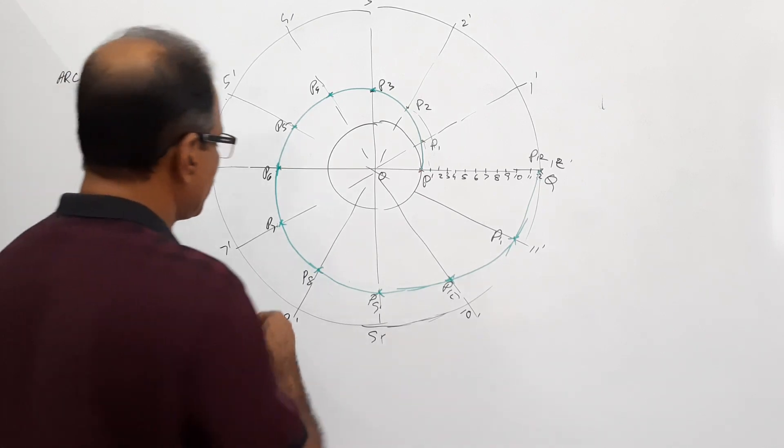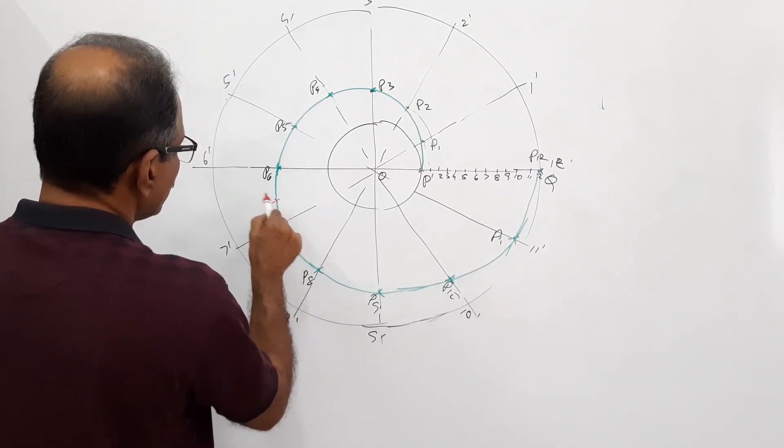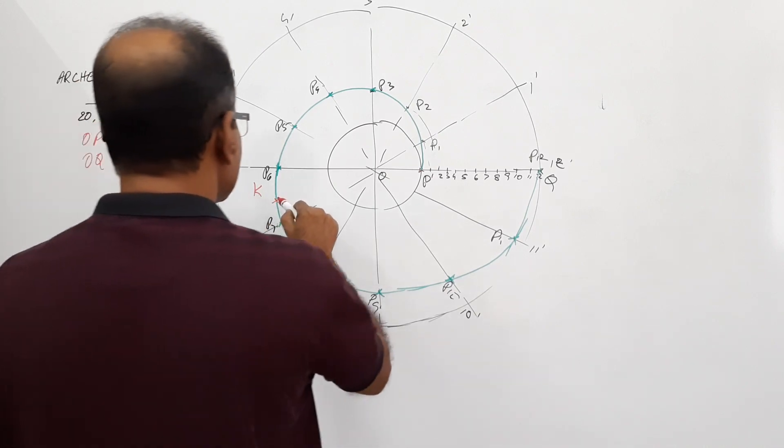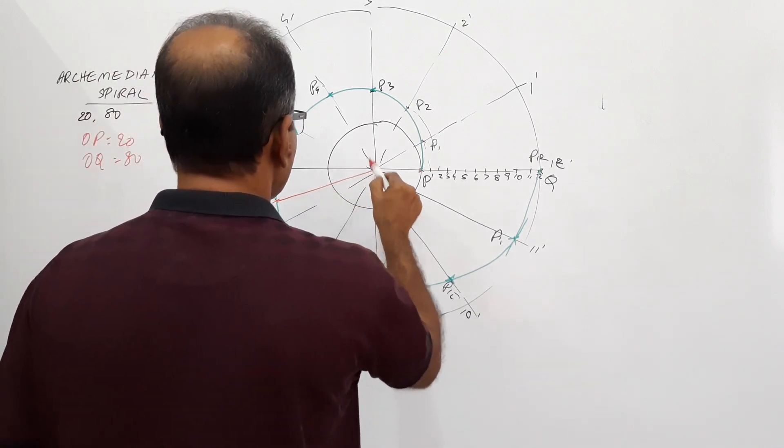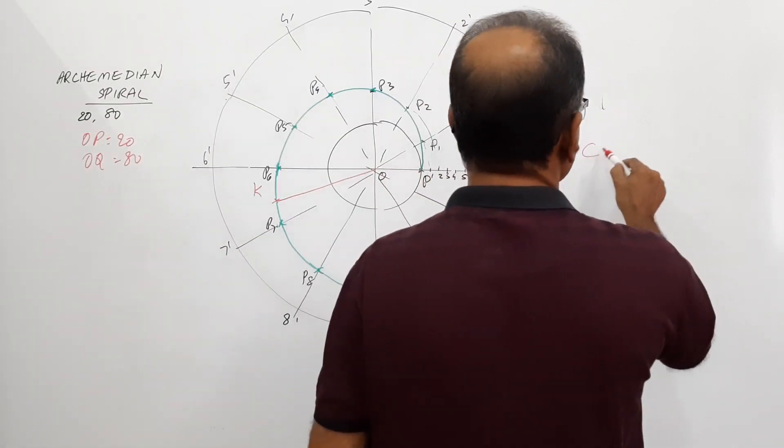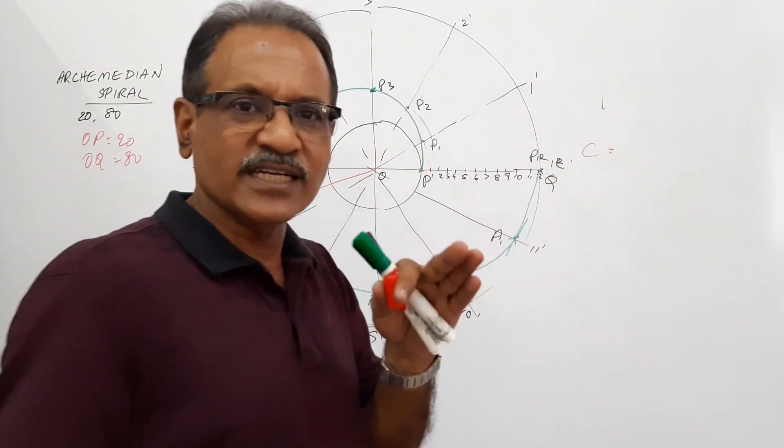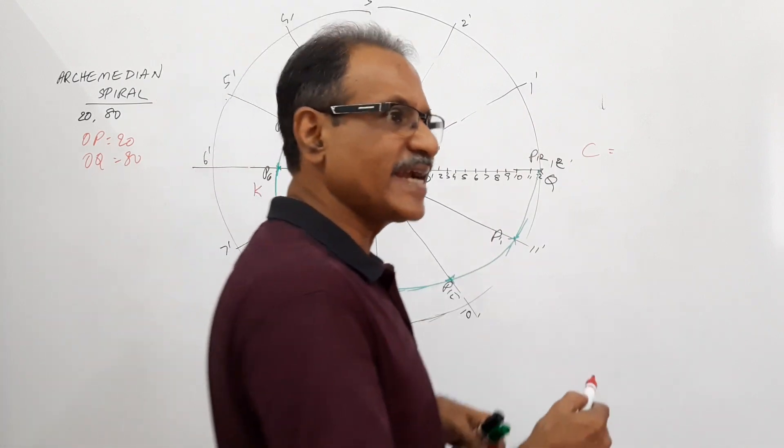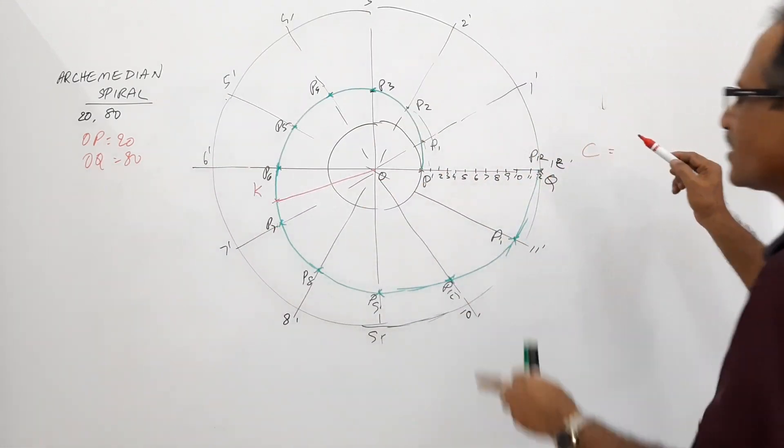Now, our idea is to draw normal and tangent at any point at Q. Normal and tangent at Q. What you do is join O to Q or Q to O. Now, you have to find out a constant of the curve which is equal to the radial distance traveled divided by the angle traveled in radians.